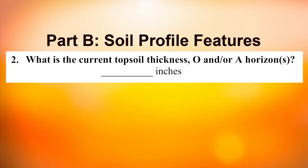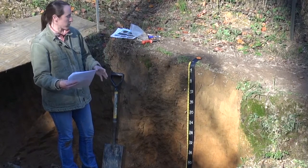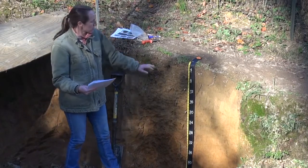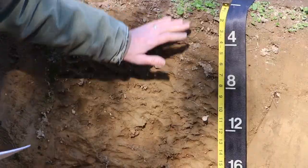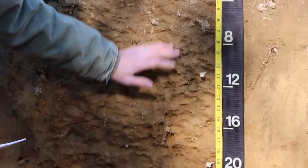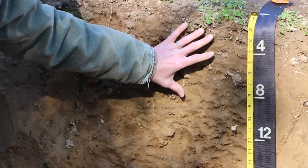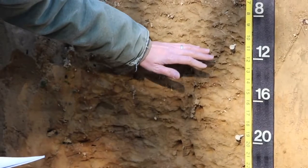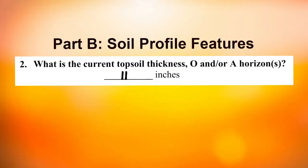Question two asks how thick our topsoil is. Topsoil includes the O and A horizons if both are present. In this soil we just have an A horizon, so we'll measure how thick it is using the tape measure along the soil profile. The A horizon is dark in color from accumulated organic matter, and at about 11 inches that dark color starts fading. So for question two, I'll put 11 inches.